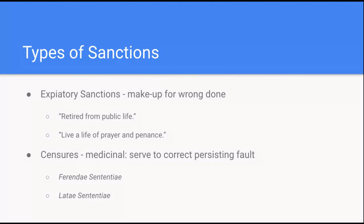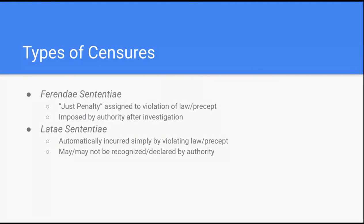Censures are considered medicinal sanctions, like a medicine. A medicine is there to heal a wound or an illness. These censures, these sanctions, these penalties that are imposed are there to correct a fault that is occurring. And they come in two types. You have the ferendae sententiae, which is anytime a law is written and says that it carries a just penalty without indicating what the penalty is — it's a ferendae sententiae.